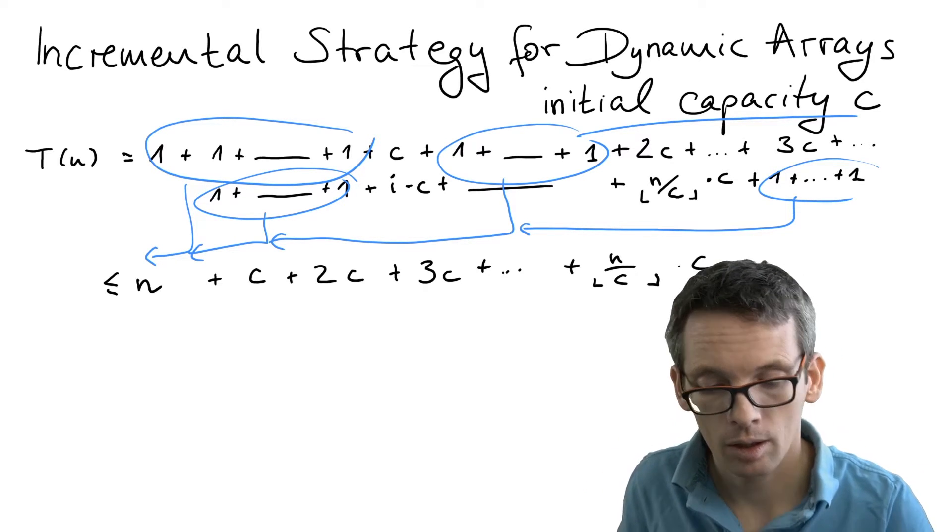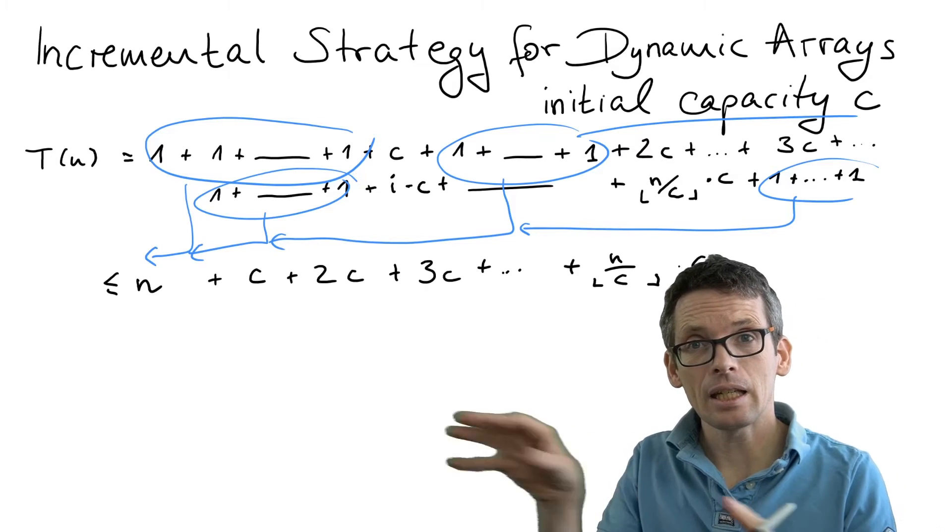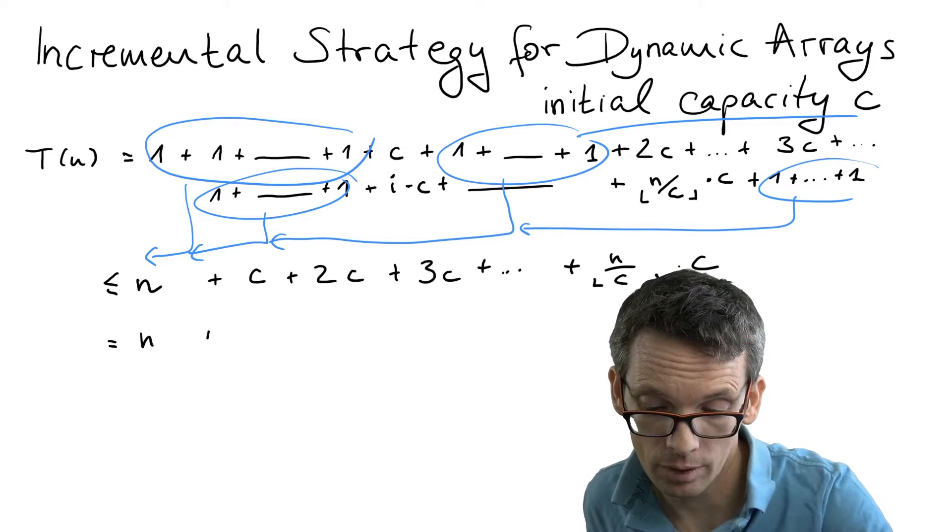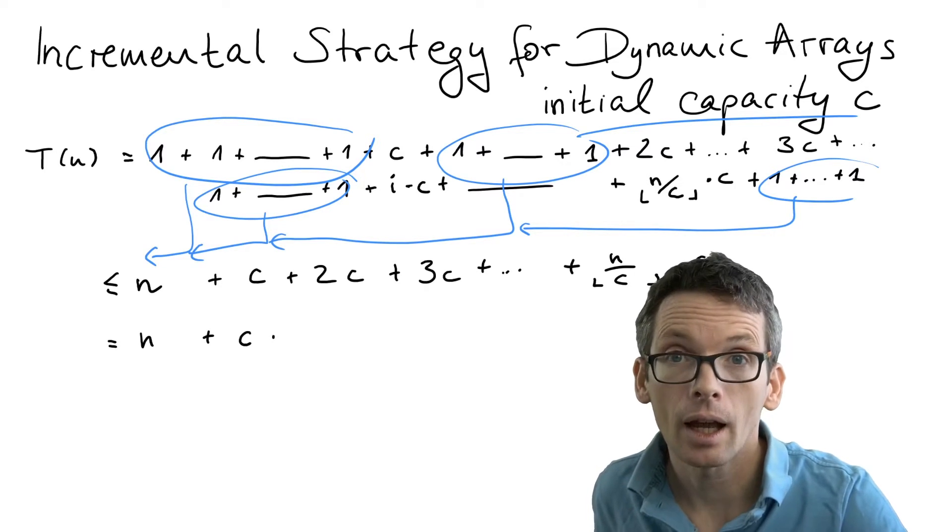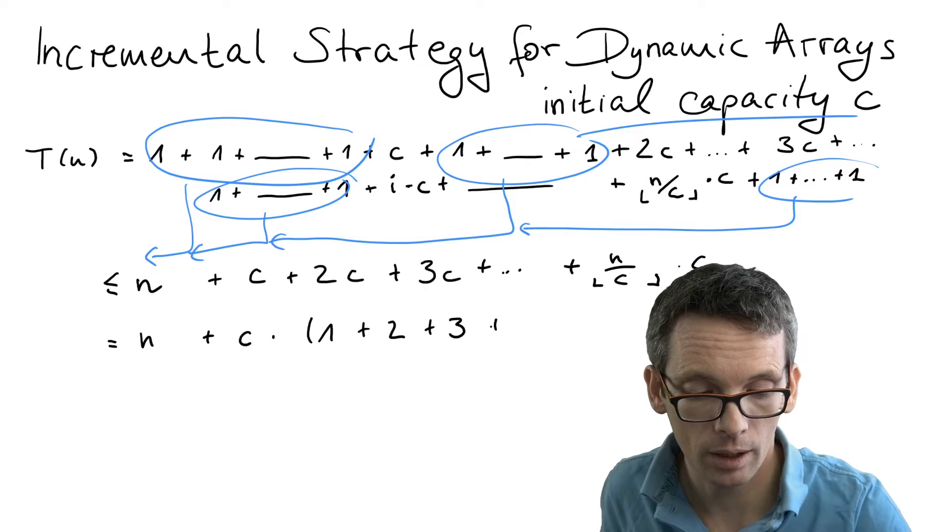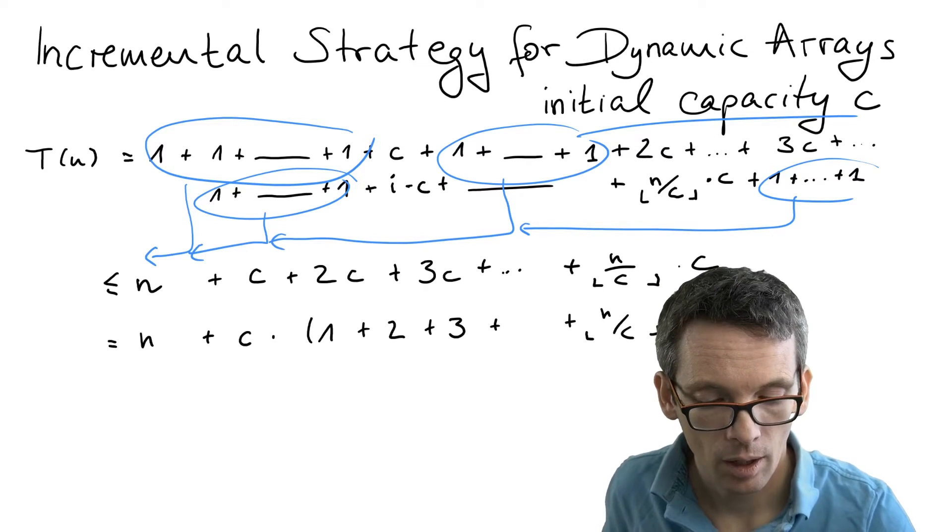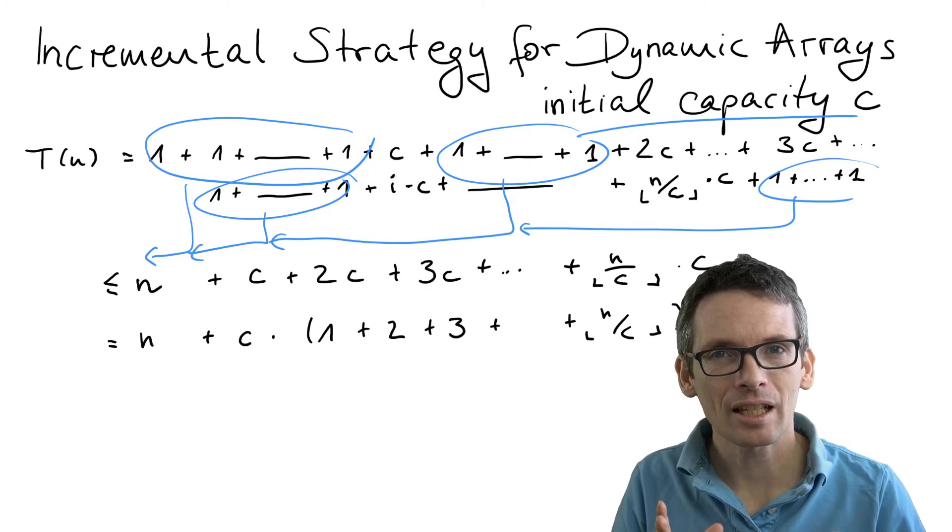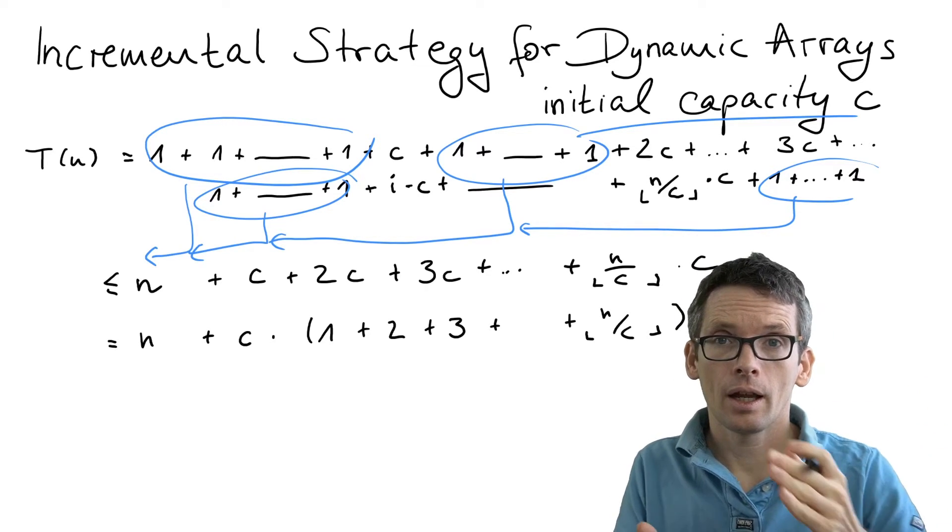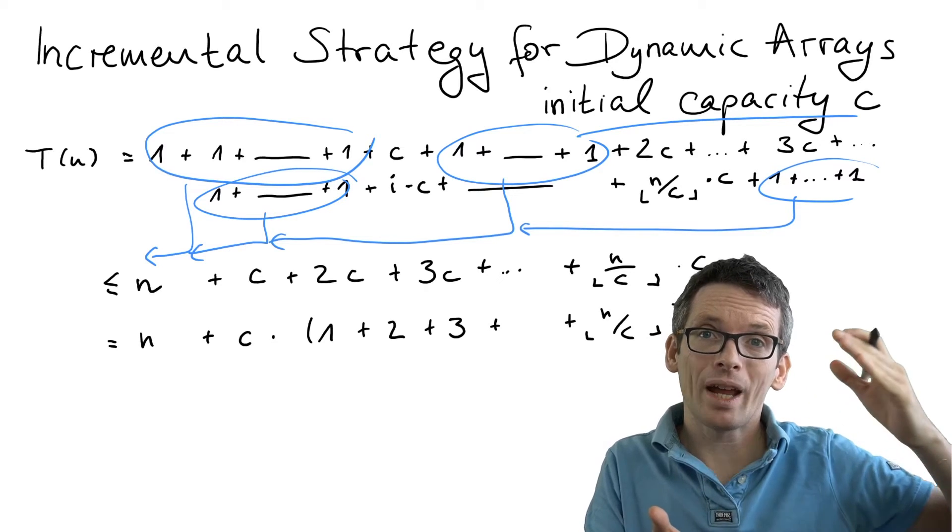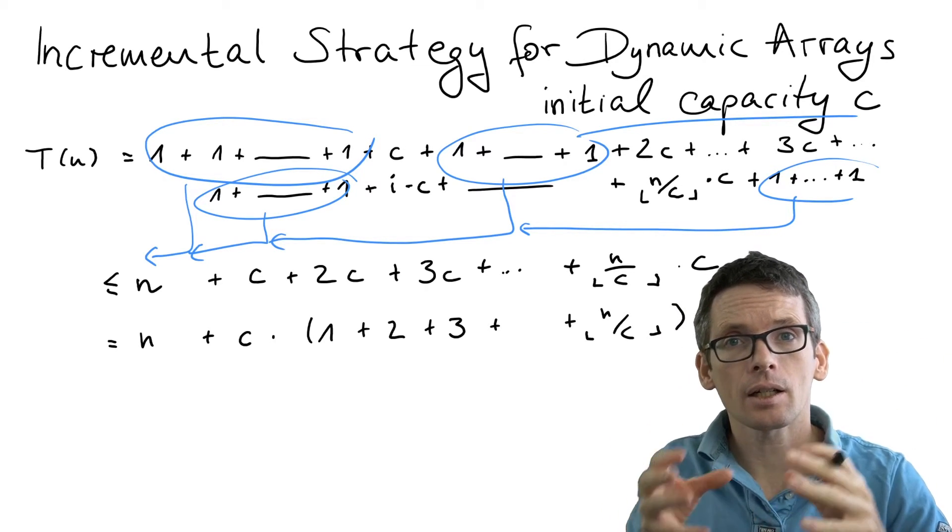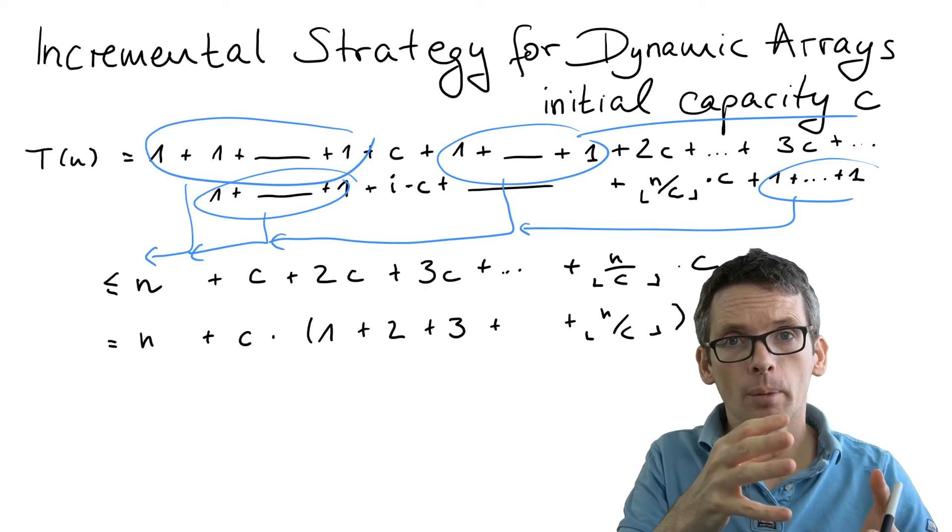And now we have the sum 1 plus 2 plus 3 and so on, up to n divided by c. This is now the arithmetic series. So 1 plus 2 plus 3 and so on—if the sum goes up to n, then it evaluates to n times (n plus 1) divided by 2.